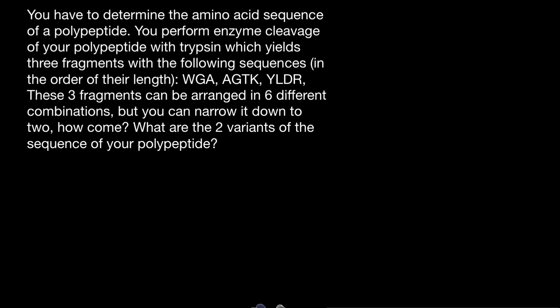Here's the problem. You have to determine the amino acid sequence of a polypeptide. You perform enzyme cleavage of your polypeptide with trypsin, which yields three fragments with the following sequences in order of their length: WGA, AGTK, YLDR. These three fragments can be arranged in six different combinations, but you can narrow it down to two. How come? What are the two variants of the sequence of your polypeptide?